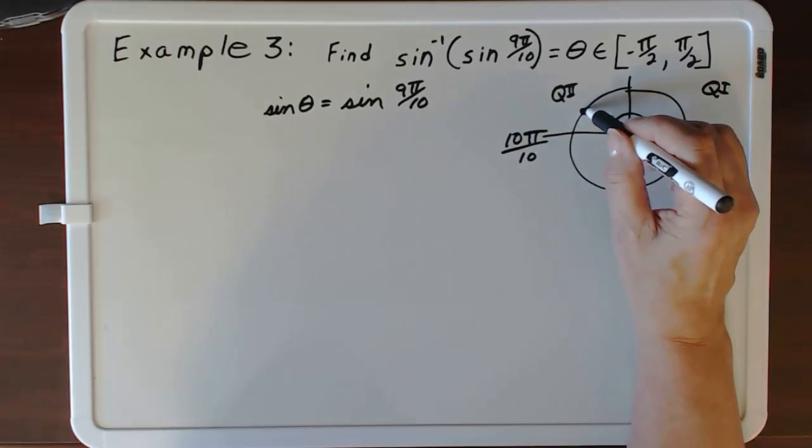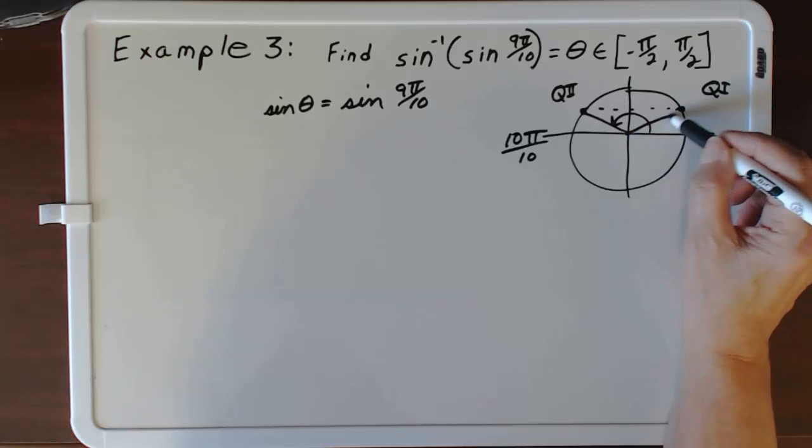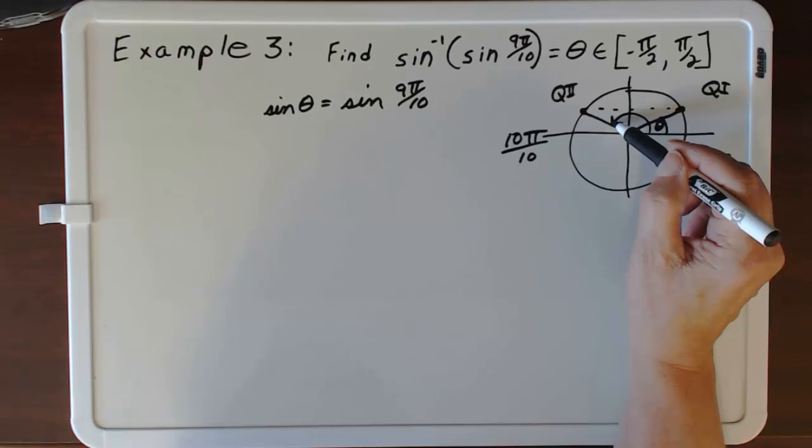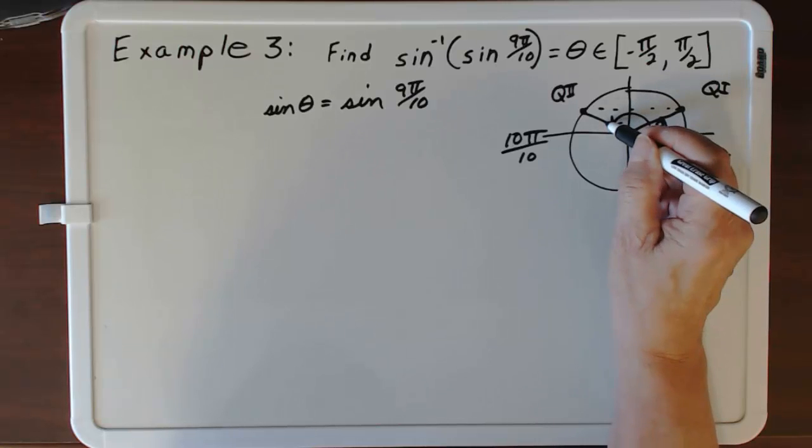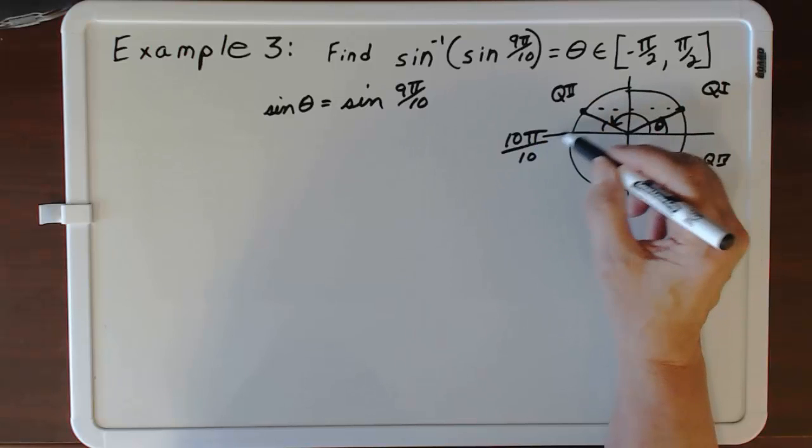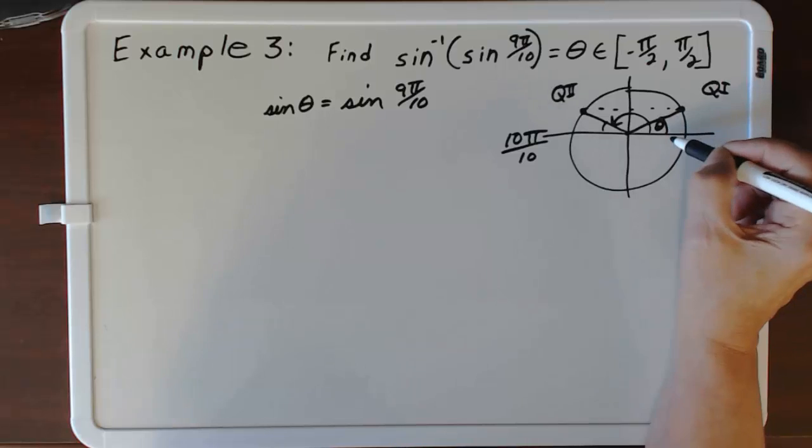So we see that if we come straight across here, our theta is going to live here. Since this angle is 9π over 10, and this angle is 10π minus 9π over 10, we see that theta is π over 10.